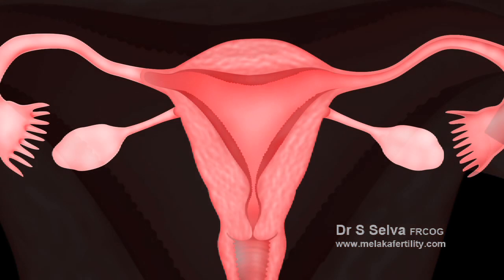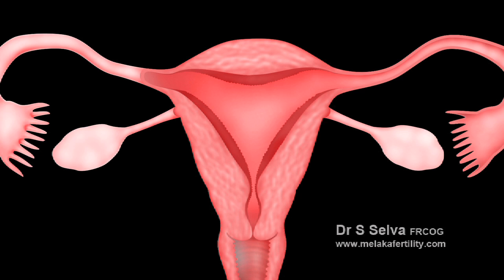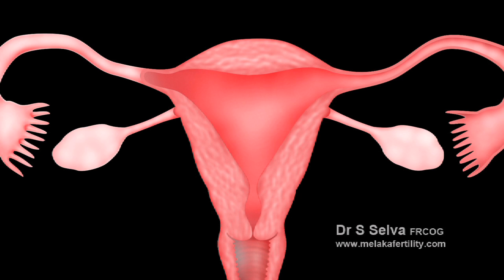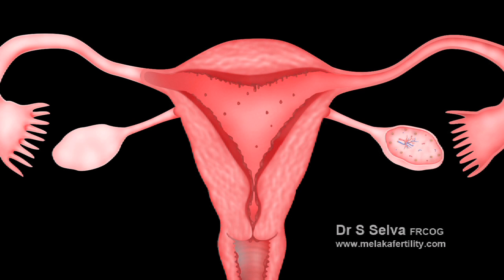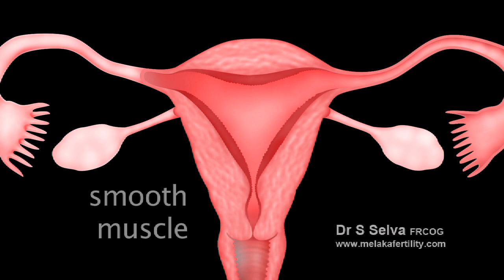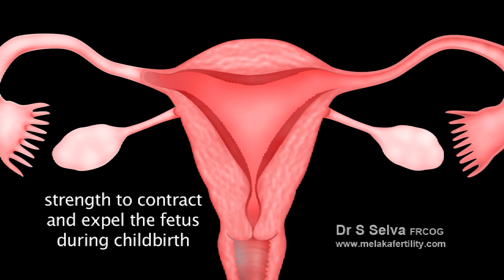The inner layer or the lining of the uterus is called the endometrium. Every month it thickens in preparation for potential pregnancy and sheds during menstruation if pregnancy does not occur. The middle layer of the uterus is known as the myometrium. It is mainly composed of smooth muscle cells which collectively give the uterus the strength to contract and expel the fetus during childbirth.